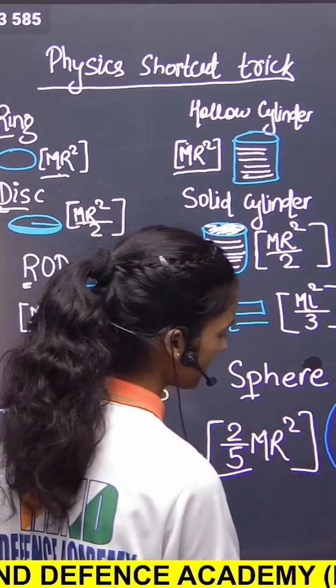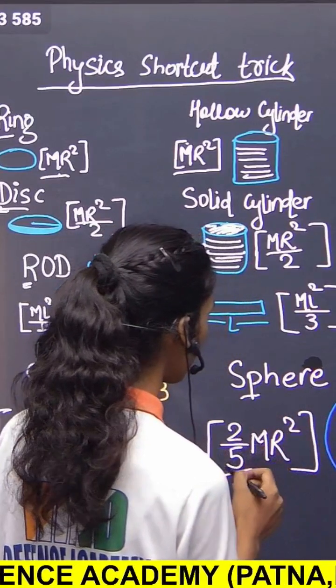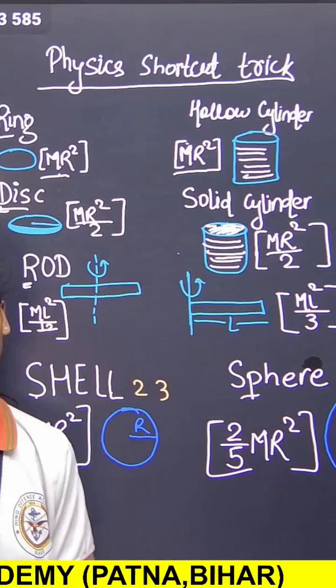Sphere. P for 5, so we can write 2 by 5 MR square. That's all. Thank you.